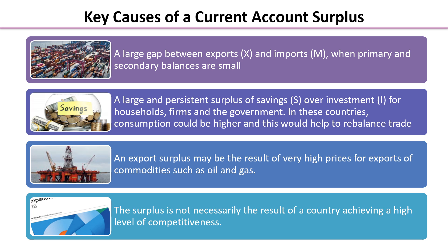Now, what sorts of things cause a current account surplus? Well, first of all, fairly evidently, there must be a large positive gap between exports and imports, especially when primary and secondary balances are small. And there can be a large and persistent surplus of savings over investment for households, firms and governments.